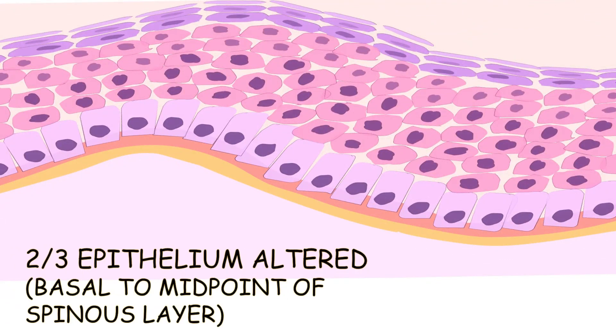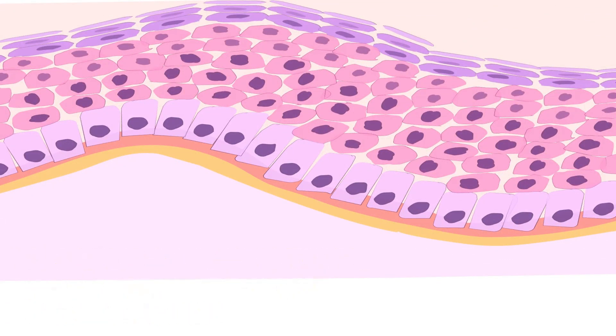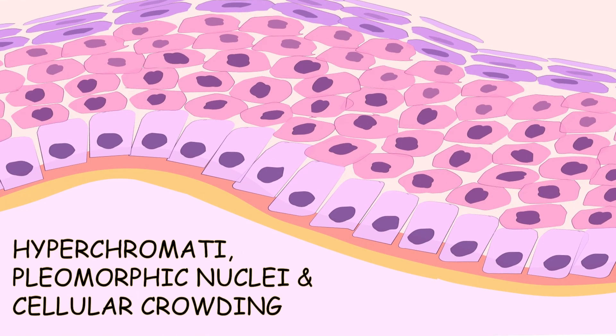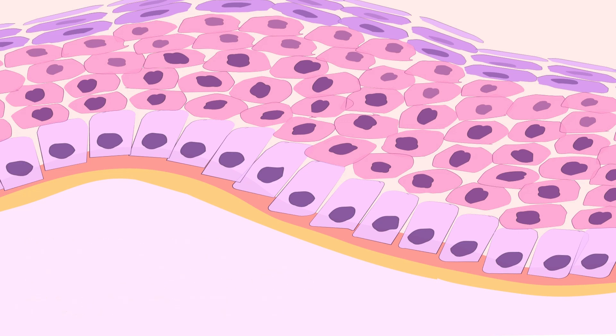In moderate dysplasia, you'll observe hyperchromatic pleomorphic nuclei and cellular crowding.